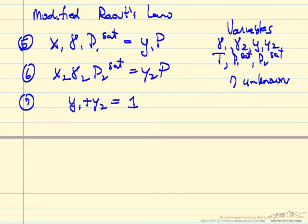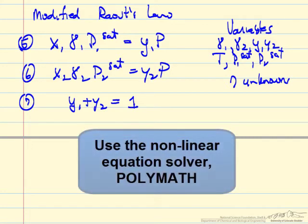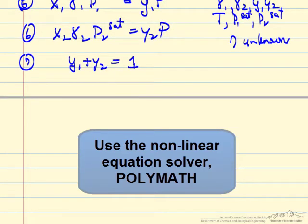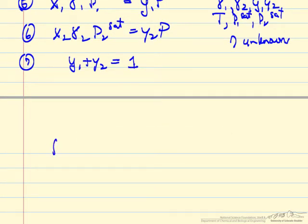Our seventh equation is that the mole fractions of y1 plus y2 must add to one. So now seven equations and seven unknowns, we're going to substitute these into the non-linear equation solver in POLYMATH. I'll just look at one of them to demonstrate how we do this. We essentially say there's some function, and we want that function to be zero.